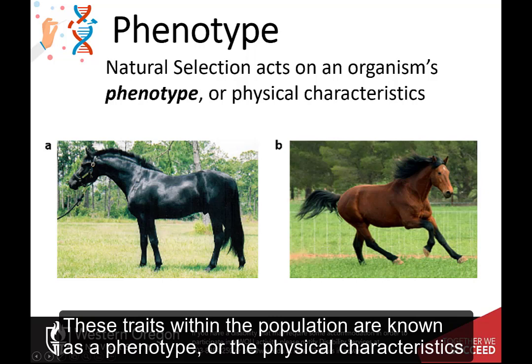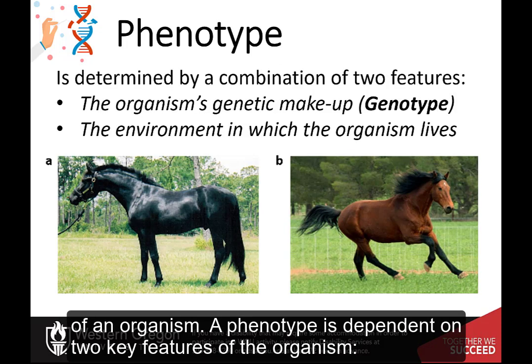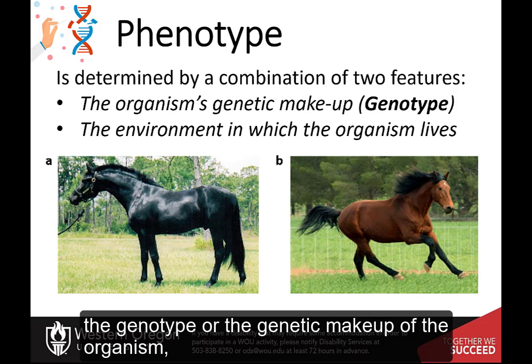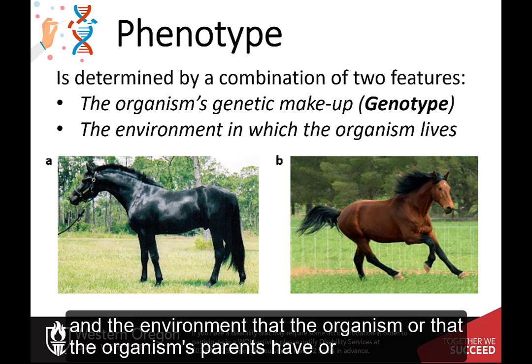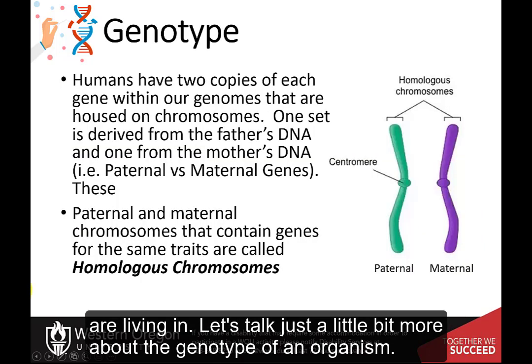These traits within a population are known as a phenotype, or the physical characteristics of an organism. A phenotype is dependent on two key features of the organism: the genotype, or the genetic makeup of the organism, and the environment that the organism or that the organism's parents have or are living in.